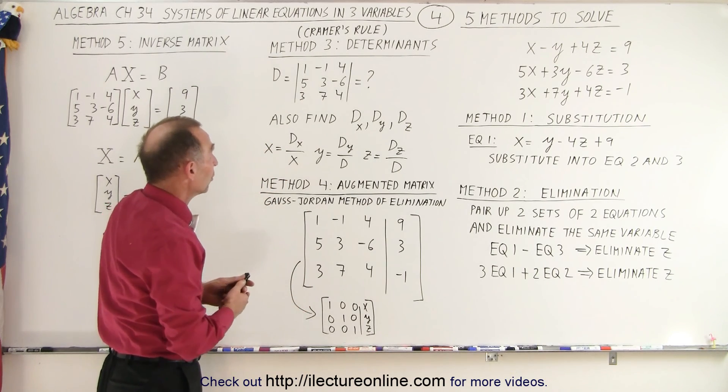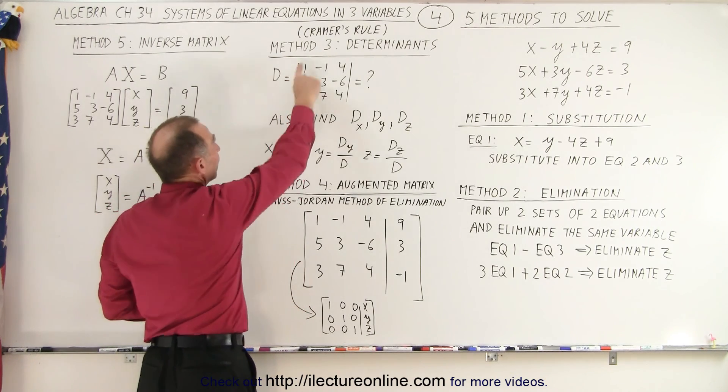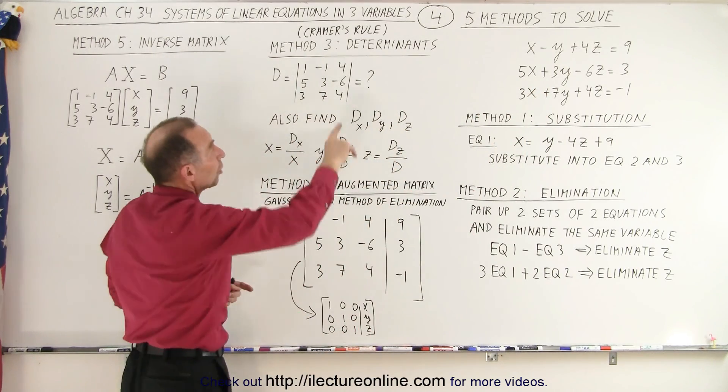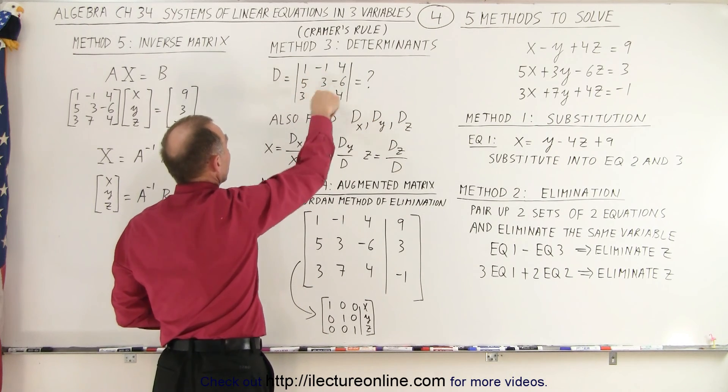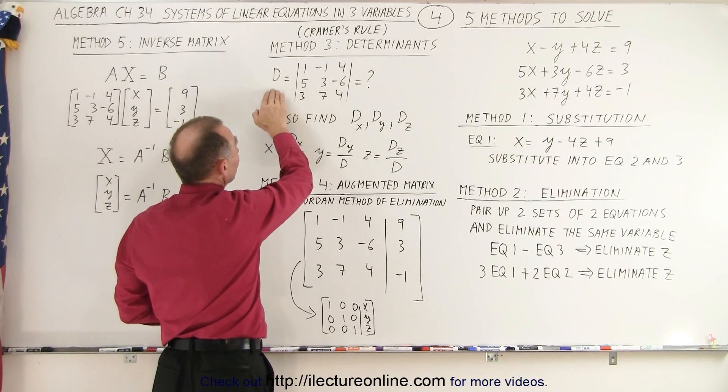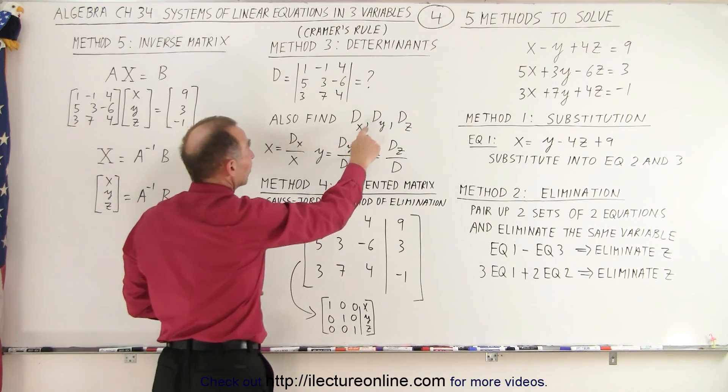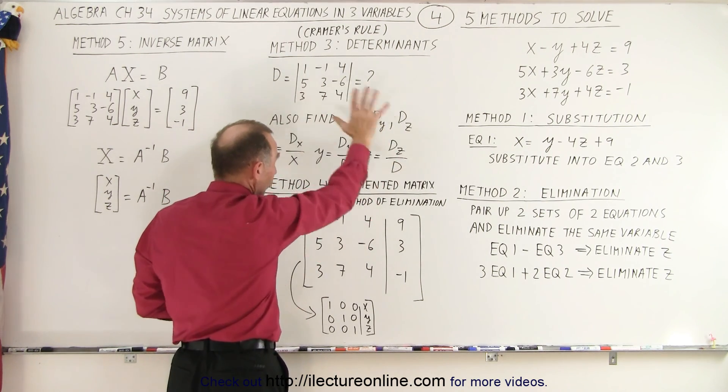Or we can use determinants. So what we're going to do here is take all the coefficients of the x, y, and z variables in our three equations. Notice when you take all the coefficients, we end up with this. And we're going to teach you how to find the determinant. Then we also need to find d sub x, d sub y, and d sub z. Again, we'll show you how to do that.